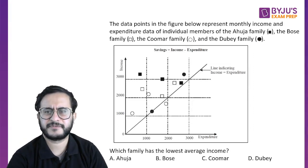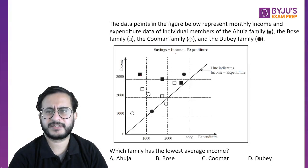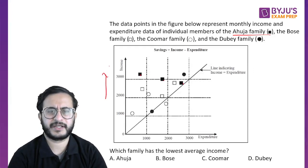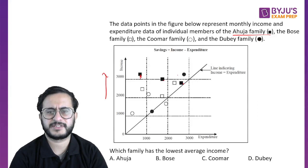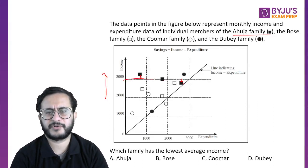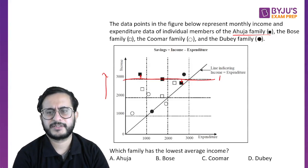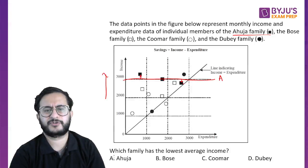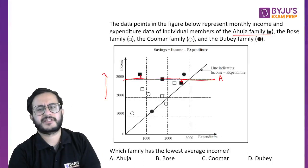Let us look at the first family — this is the Ahuja family. If you see, this is one income, this is the second income, this is the third income. Income is indicated in this direction. If you see the rough average, the deviation is just as much higher as it is lower, so the average income of the Ahuja family would be about this much. You do not need to be accurate about whether it is 3000 or 2950 — just take this value.